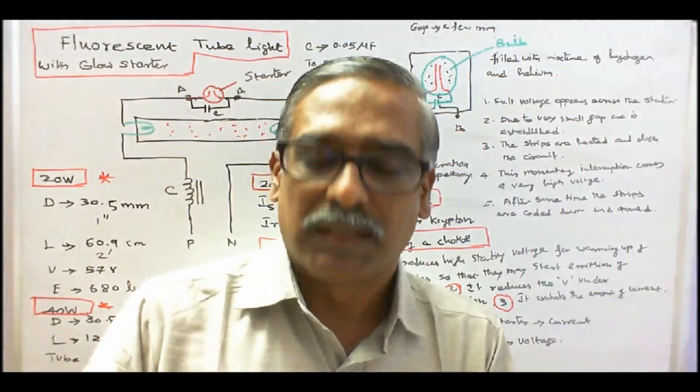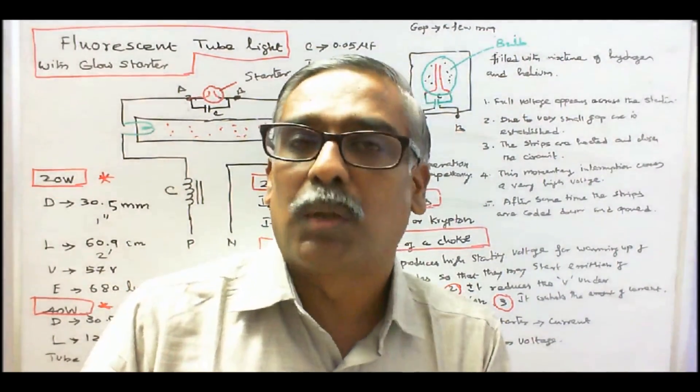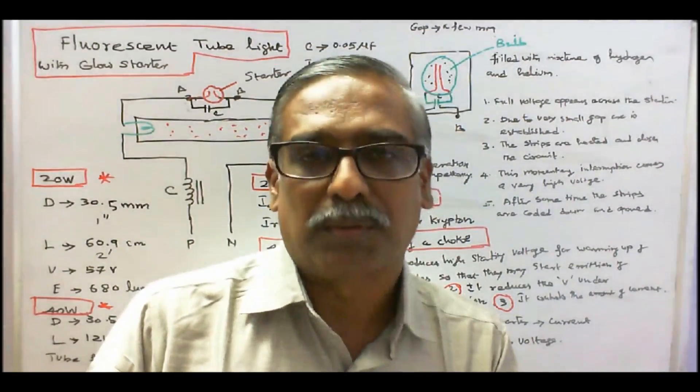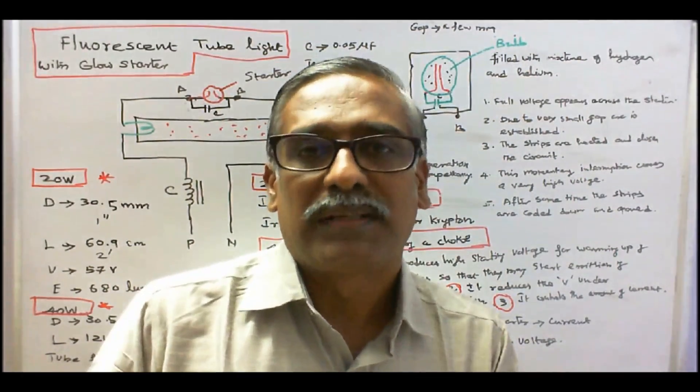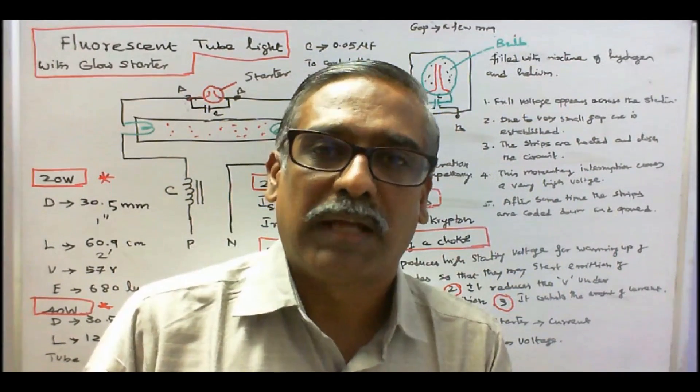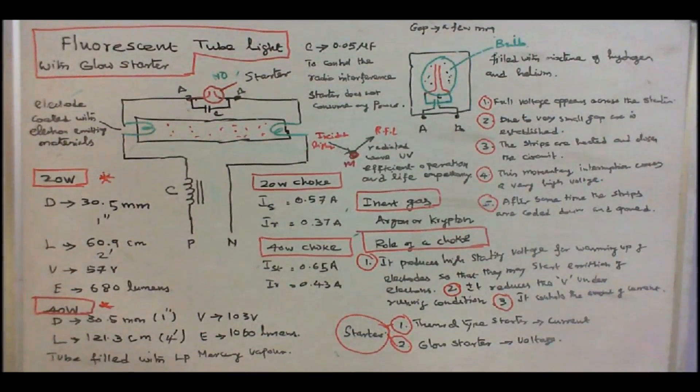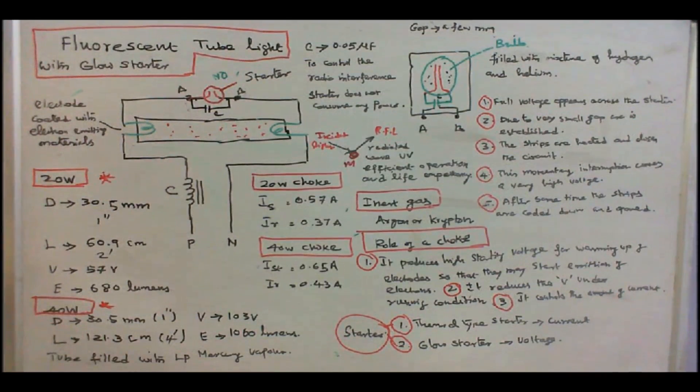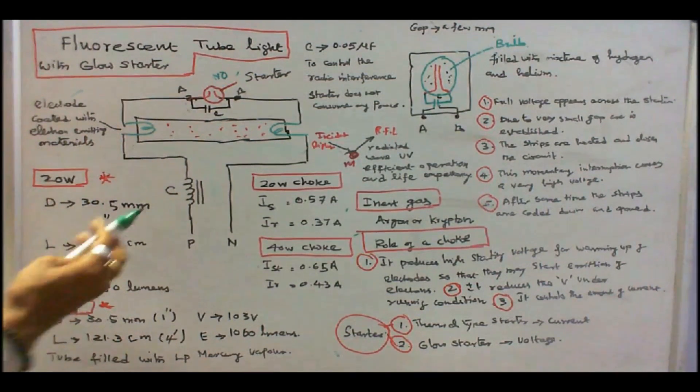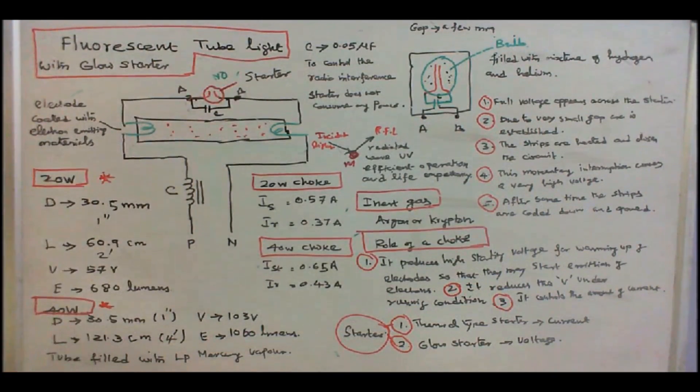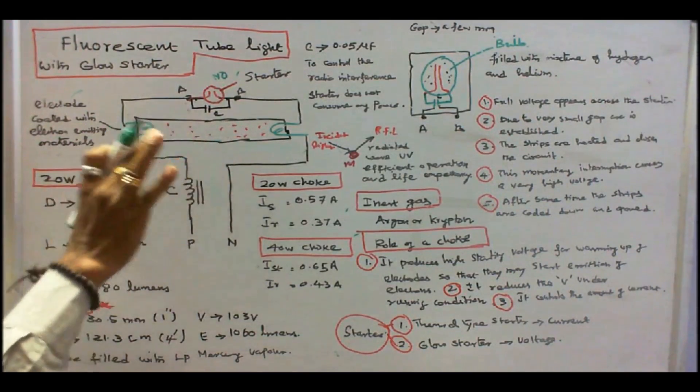Fluorescent lamps requires a ballast, which is a device used to provide and control the voltage in the lamp and stabilize the current in the circuit. Now we will see the constructional detail and operation of a fluorescent tube light. The fluorescent tube light has three major components. One is a choke, second is a tube light, third is a starter.